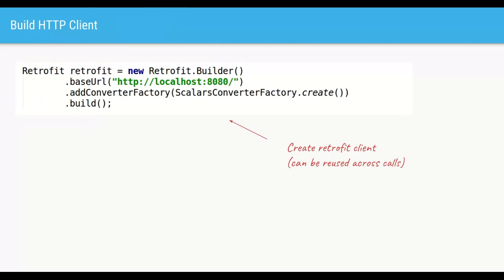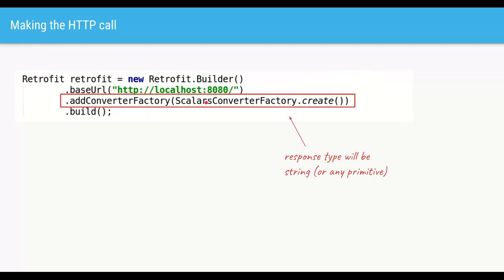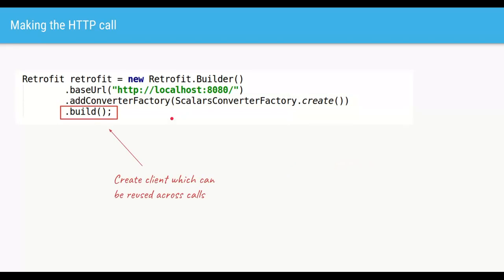The next step is to create a Retrofit client — this is the actual HTTP client that will make the HTTP calls for us. We'll use a builder to create the client, set the URL of the target service (localhost 8080 in this case), and add a converter factory. This factory is used by Retrofit to convert responses into the type we need. To get responses as a String, we use the Scalar factory. Once built, we can store this client and reuse it for multiple HTTP calls.